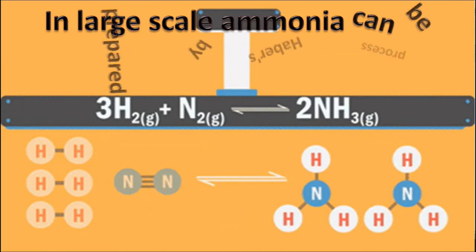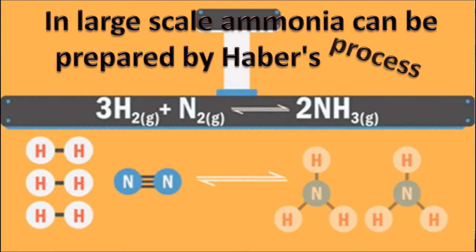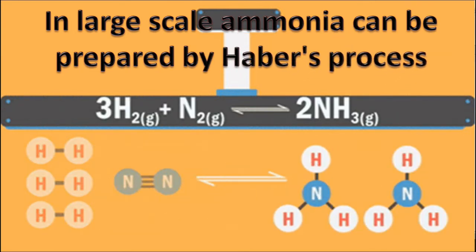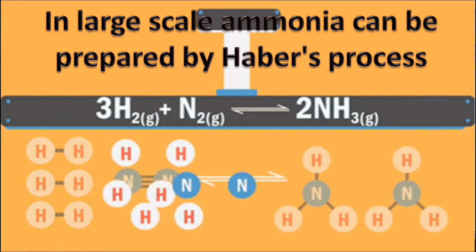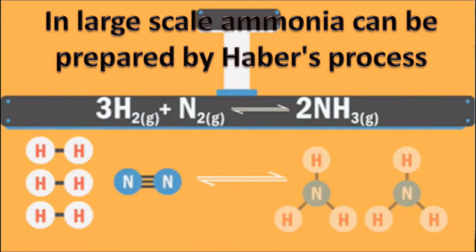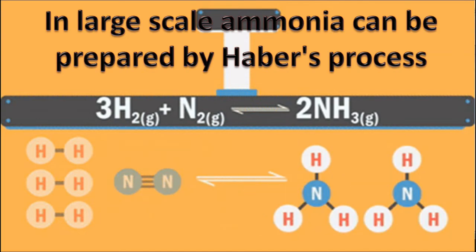In large scale or in industry, ammonia gas can be prepared by Haber's process. In this process, hydrogen and nitrogen combine at high temperature and high pressure in the presence of iron and molybdenum catalysts to give ammonia.